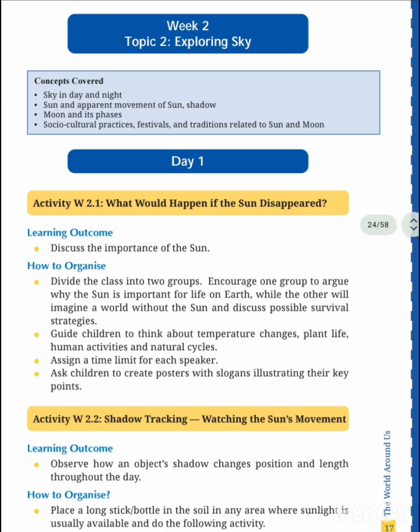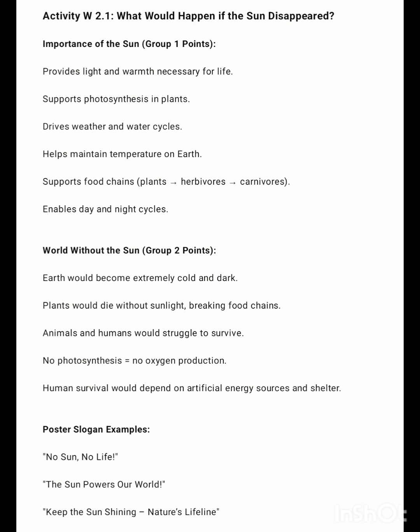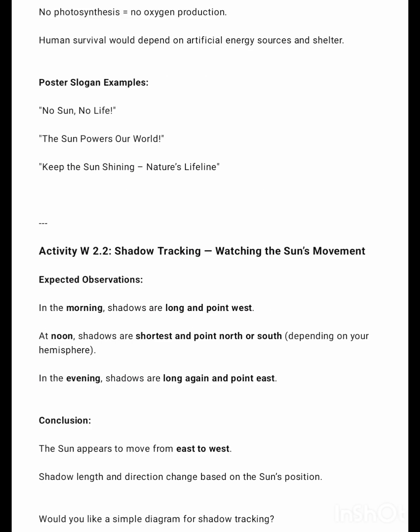Next is week two topic: exploring the sky. Day one, 2.1 — what happened if the sun disappeared? Answer: a world without the sun. Poster and slogan examples are the answers for the activity. Worksheet 2.2 topic is shadow tracking, watching the sun's movement.